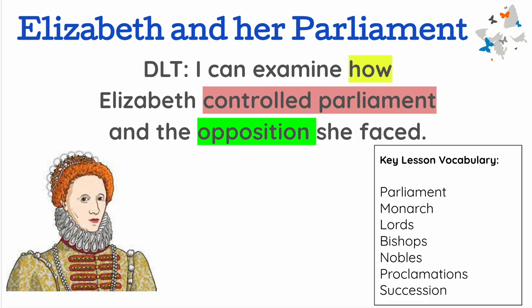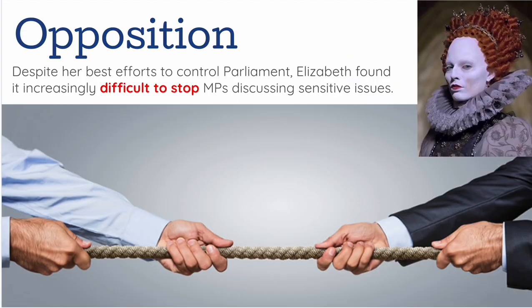In the last video, we looked at how Elizabeth controlled Parliament. This video is going to focus on the opposition that stood against Elizabeth in Parliament and what she did to control the people who stood against her. Despite her best efforts to control Parliament, Elizabeth found it increasingly difficult to stop MPs discussing sensitive issues.